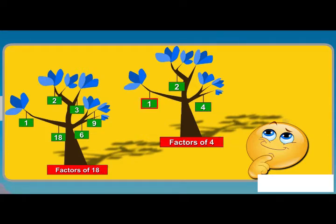The factors of 4 are 1, 2 and 4, and factors of 18 are 1, 2, 3, 6, 9 and 18.